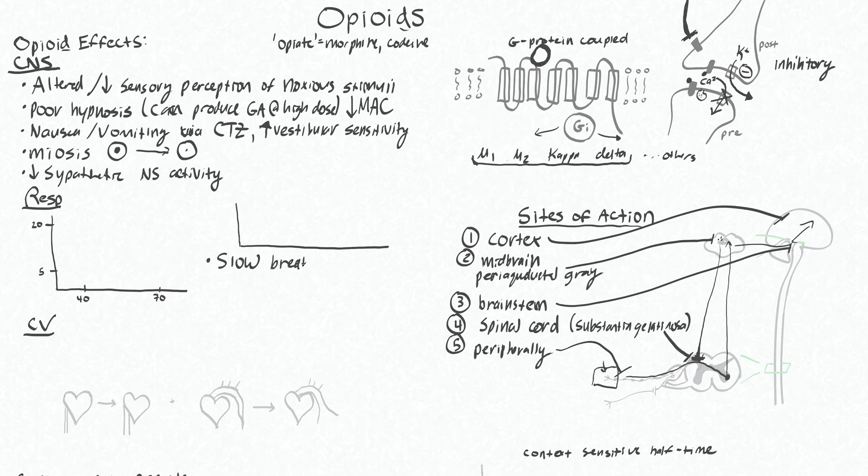So if we have our normal respiratory pattern here, we give someone opioids, they'll get deep and slow. But not only do you change the pattern to being deeper and slower, but your overall minute ventilation is decreased.